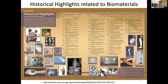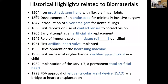Now let's discuss some history. There are good historical highlights related to biomaterials, especially bionics and related medicine, spanning over 500 years. About 500 years ago, there were iron prosthetic hands with flexible finger joints for those who had lost their hands. About 200 years ago, the endoscope was developed for minimally invasive surgery.